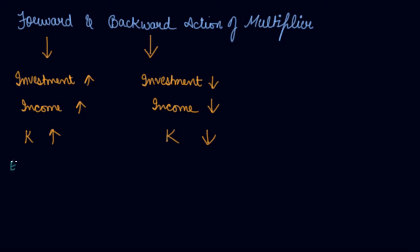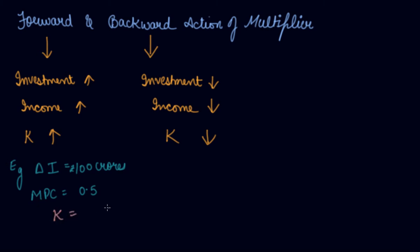Let's take an example. If your investment increases by 100 crores and your MPC is 0.5, we need to calculate the change in income and the multiplier. First, let's calculate the multiplier K: K = 1 divided by (1 minus 0.5), which gives K = 1 divided by 0.5, that is 2.